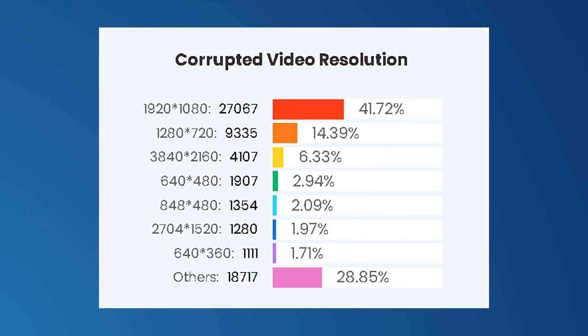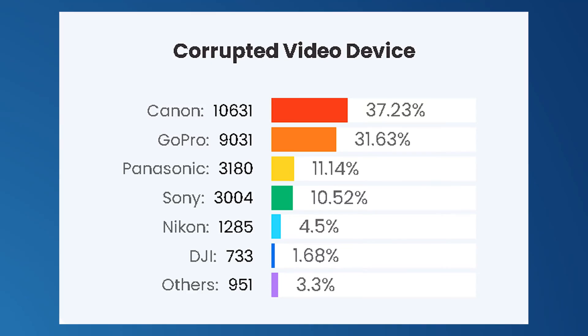Like the file format, even video resolution can also increase the chances of it getting corrupted. Videos with 1920 by 1080 resolution are most likely to get corrupted due to external factors. On the other hand, if you have a 720p video, there's a slightly less probability that it'll get corrupted. It's also worth pointing out that the device you are using to shoot your video can also be a factor — studies reveal that videos shot on Canon DSLRs and GoPros get corrupted way more than clips recorded on other devices. And I'm actually recording on a Canon right now, so wish me the best guys.